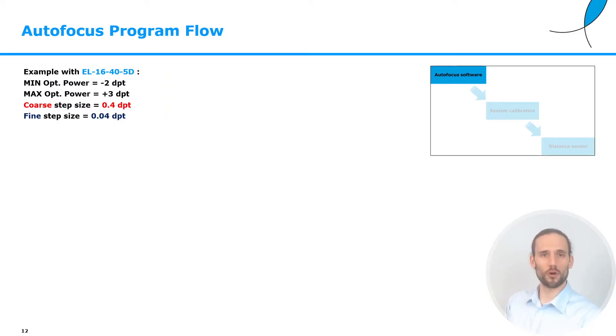Let's now look at the autofocus program flow. We will do this with the help of a block diagram. Let's suppose that we have our system that is ready to acquire images. What we will do is place the object at an arbitrary distance, then we will set the optical power of the lens to its minimum value. For example, for the EL-1640, the minimum value could be minus two diopters. Then we will define a coarse step size. For example, it could be something like 0.4 diopters.